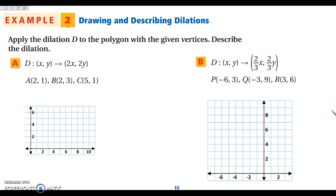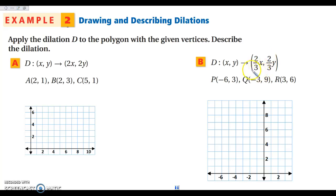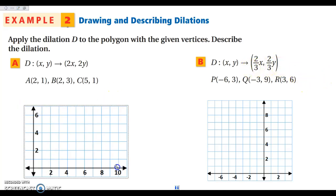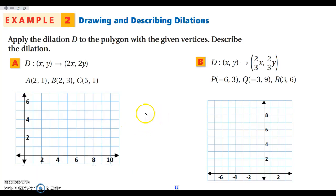When applying a dilation, recall from congruence transformations that transformation rules involved things like negative X, negative Y, or swapping X and Y. Dilations do the same thing, but the multiplier K, which is our scale factor, must be the exact same number for both X and Y. For example, two-thirds and two-thirds. What you multiply X by and what you multiply Y by must be the same to have a true dilation.